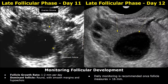In this day eleven image, you can see one large dominant follicle, whereas other follicles are much smaller in size. The appearances of dominant follicles can vary. This image is obtained on day twelve — you can easily see a large dominant follicle.